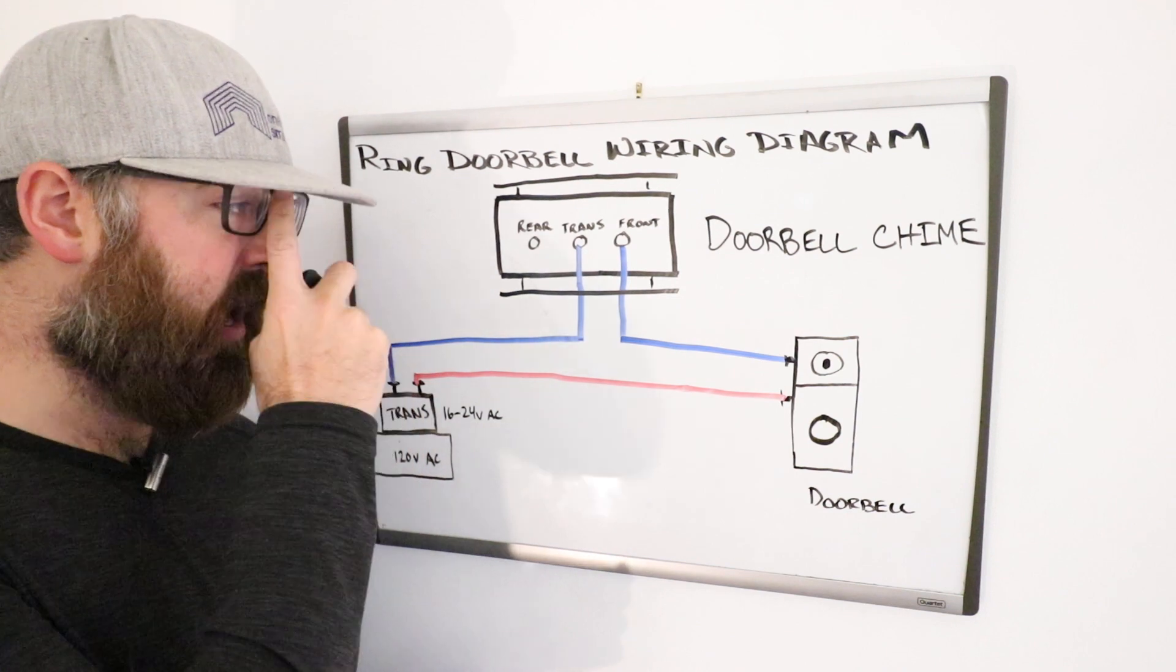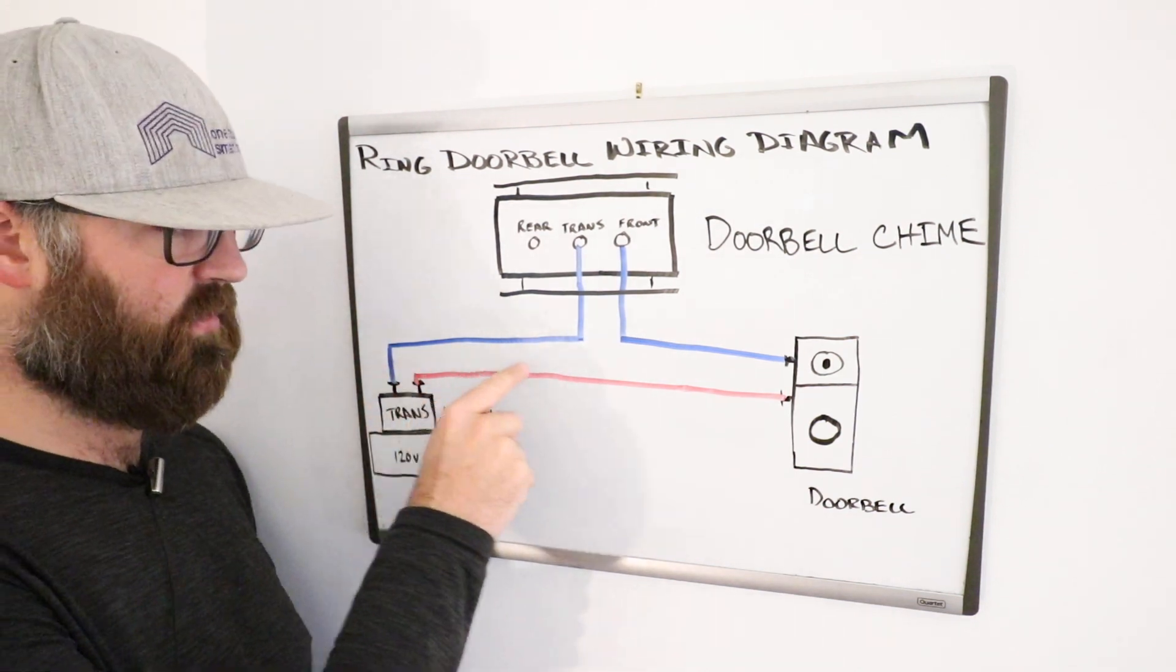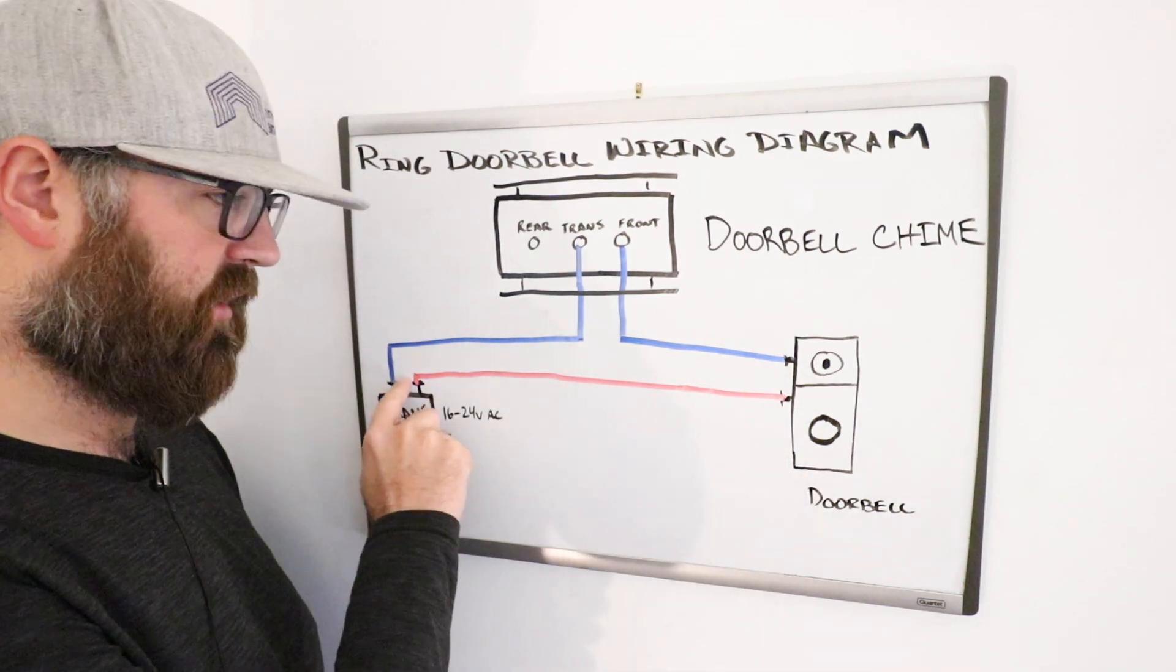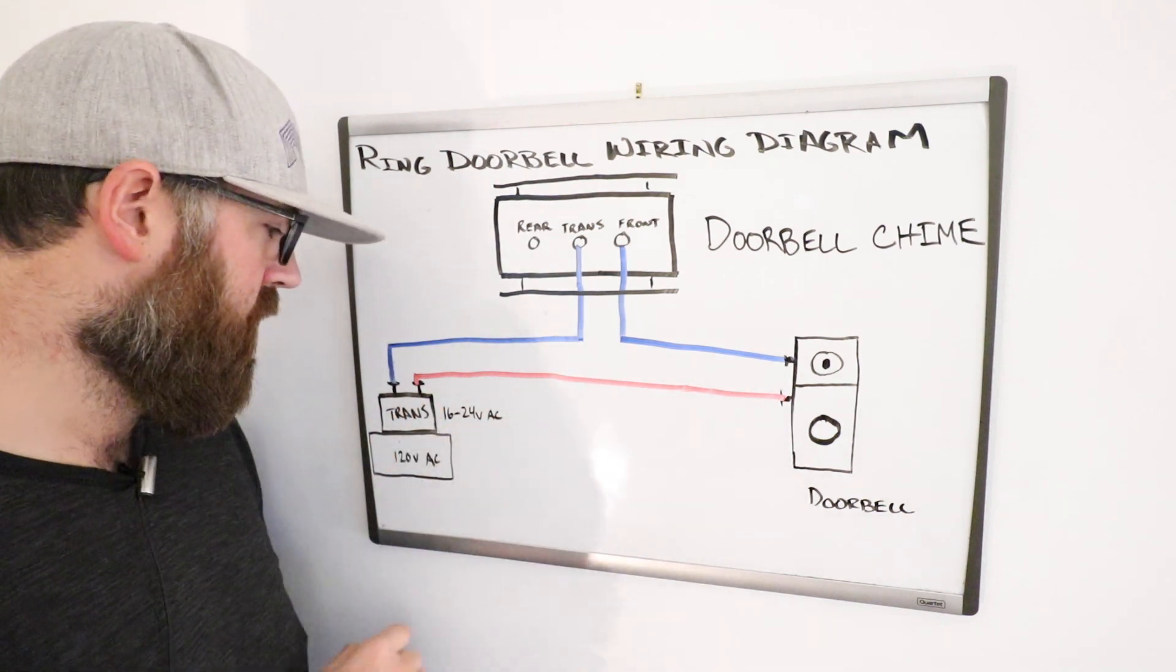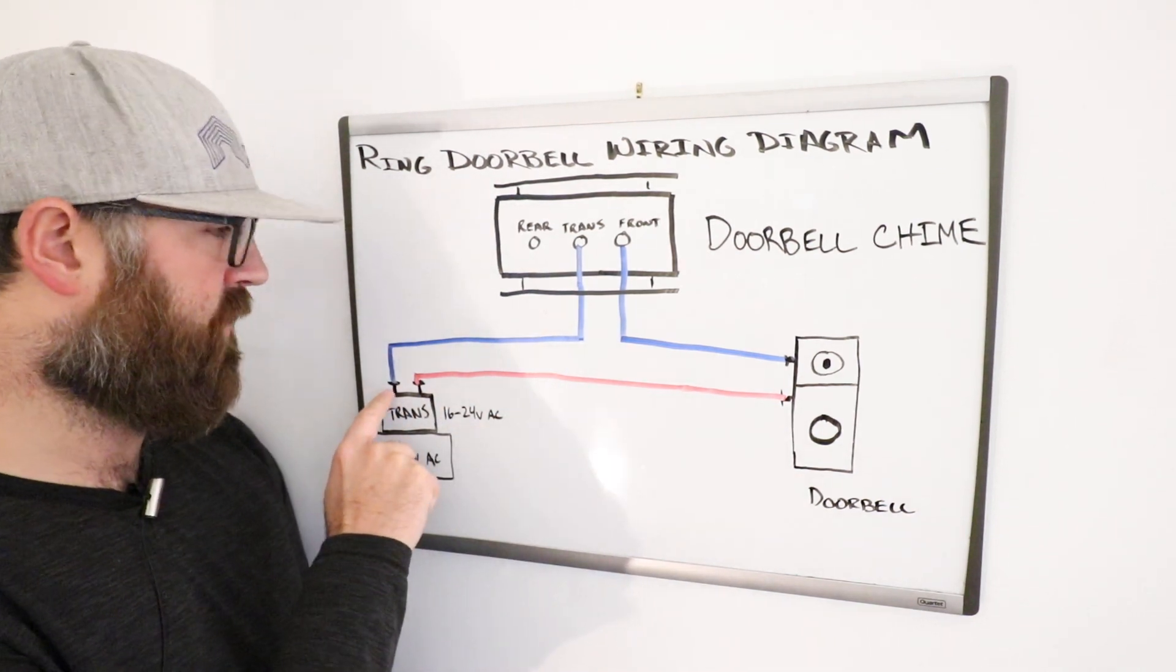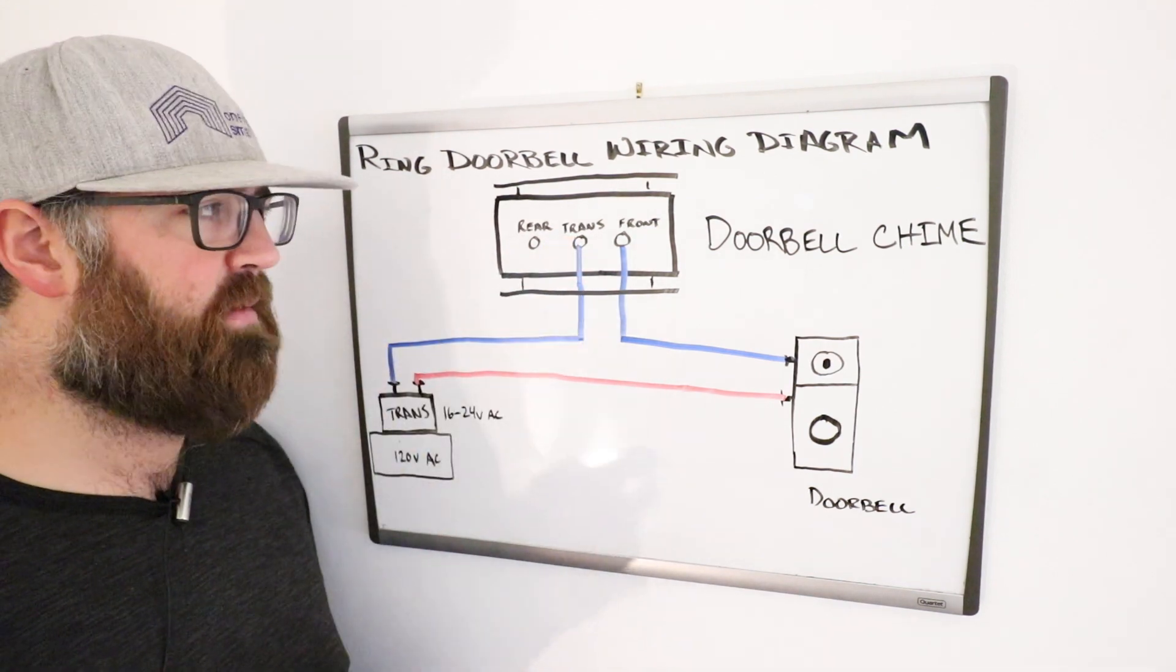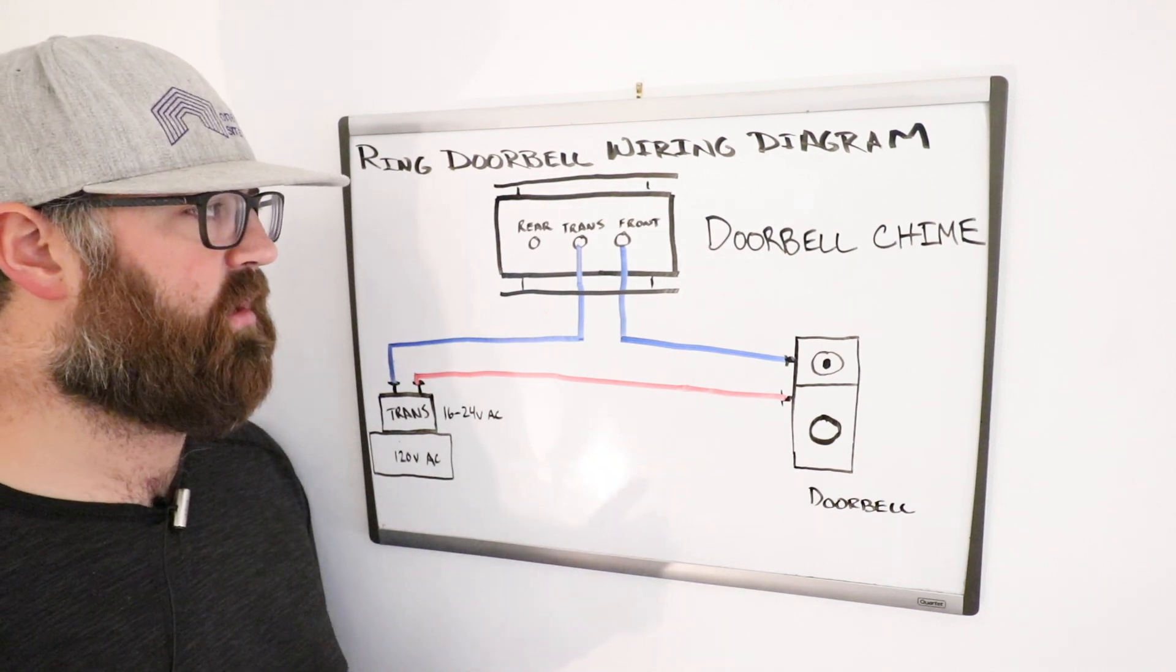So what you have is you've got one wire that will go directly from your transformer out to your doorbell. It doesn't get interrupted by anything. It goes from one terminal on the doorbell to the transformer, vice versa. Now, your other wire is going to go from your transformer and it goes to that tab on the doorbell chime that is labeled trans for transformer.